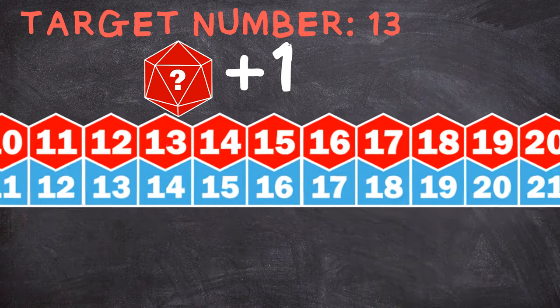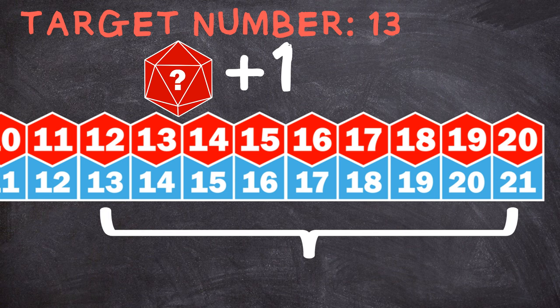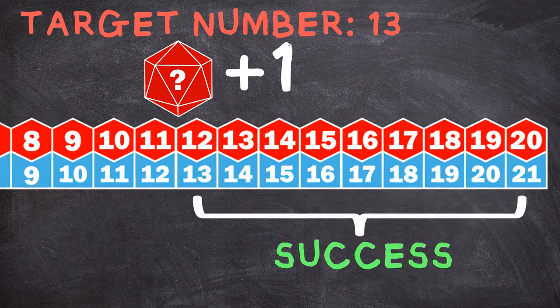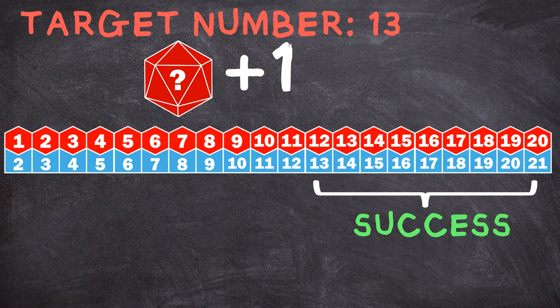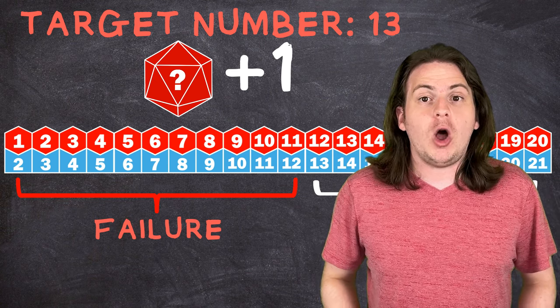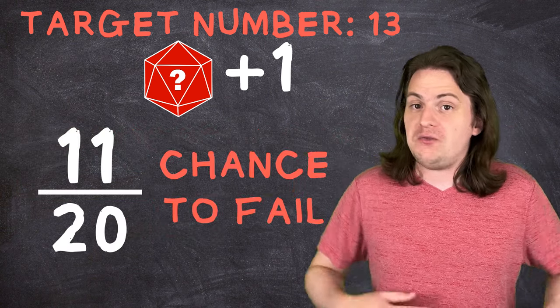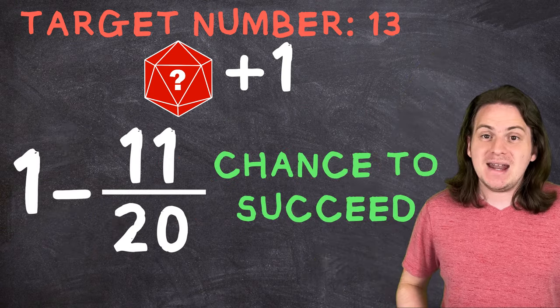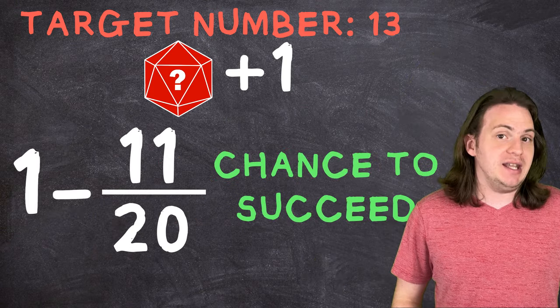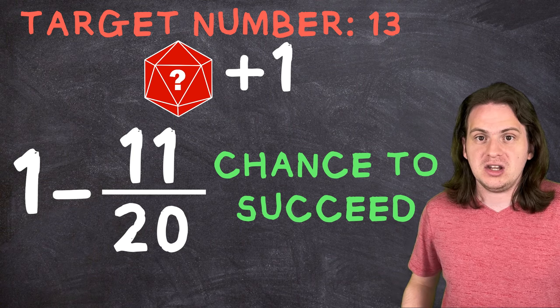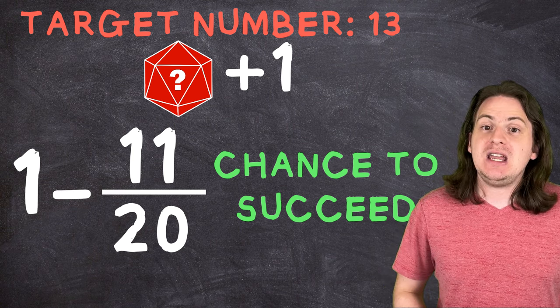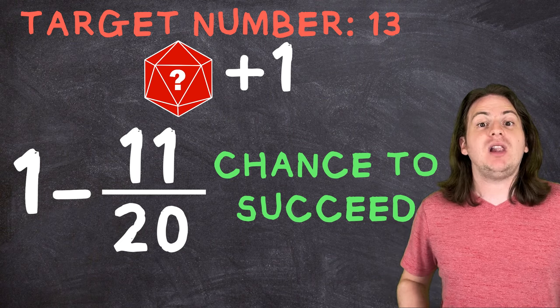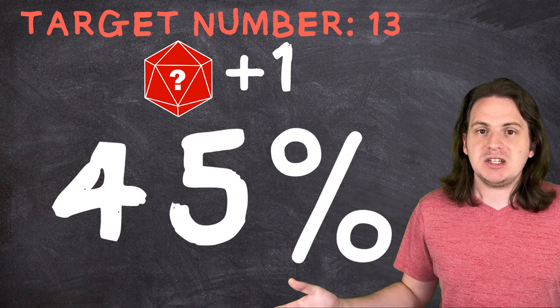12 plus 1 is 13, so you've hit the target number. Anything above 11, so 12 through 20, you'll surpass the target 13, so you'll succeed. That means that out of the 20 possible outcomes of a 20-sided die, 11 will fail. So your odds of failing this roll are simply 11 out of 20, or 55%. To find the odds of succeeding, we can simply do 1 minus the odds of failing. In all cases where you didn't fail, you succeeded. So the odds of rolling a 13 or higher on a 20-sided die with a plus 1 bonus is 45%. Pretty simple.